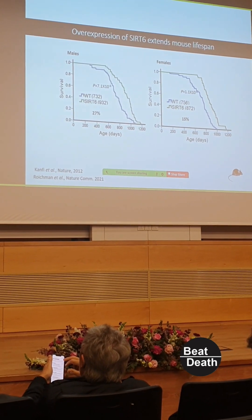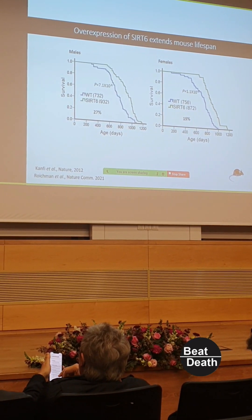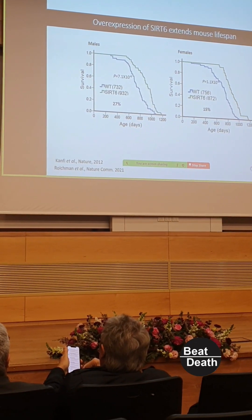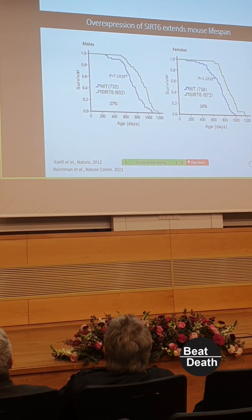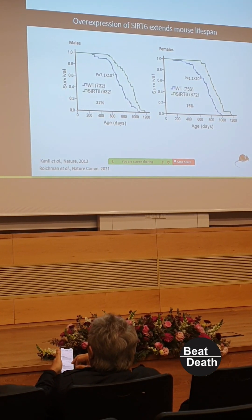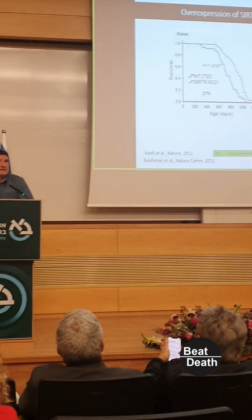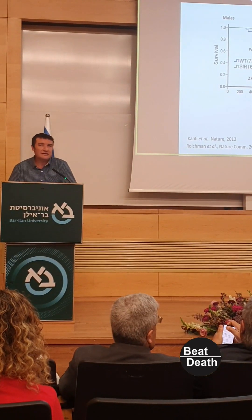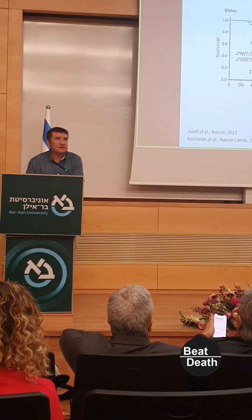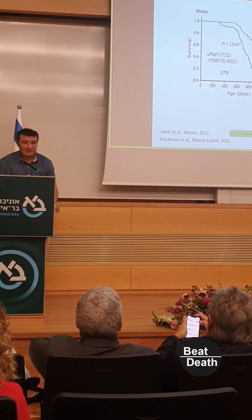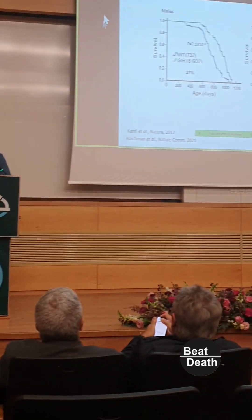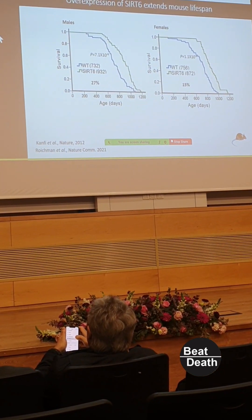We published a series of papers on this. Once we overexpress SIRT6 in male mice, they live 30% longer on average — meaning some individuals live even 50% longer. In human terms, that means instead of living up to age 90, you live up to age 120. In female mice, we extended lifespan by 15%, and we're now trying to understand the difference between males and females regarding the regulation of lifespan.